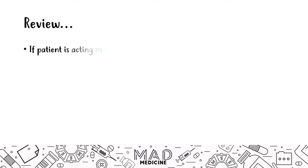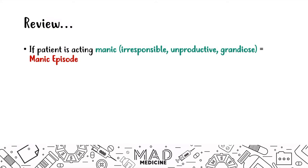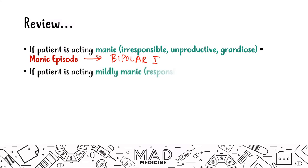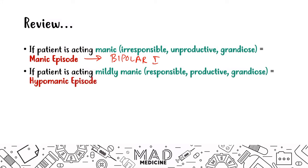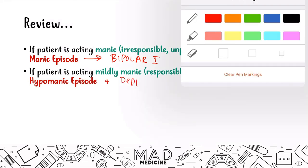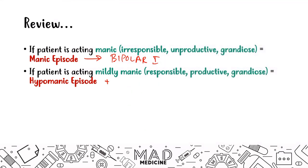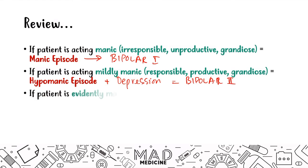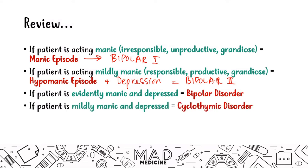Let's review everything. If a patient is acting manic — irresponsible, unproductive, having grandiose delusions — that's a manic episode and by default they're bipolar I. If a patient is mildly manic, responsible, productive, that's a hypomanic episode. If they present with hypomania and depression without full mania, it's bipolar II. If a patient is both manic and depressed, that's bipolar disorder. And if it's mildly manic and depressed, that's cyclothymic disorder.